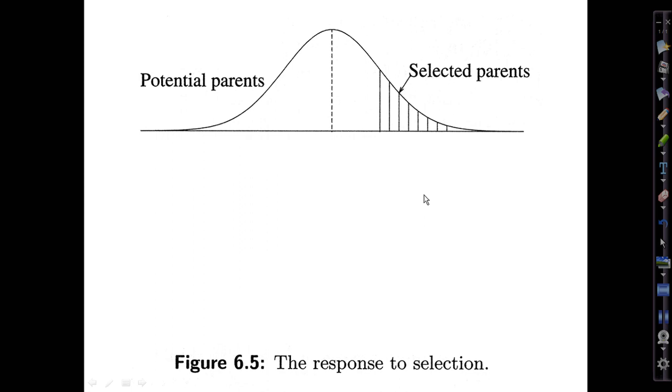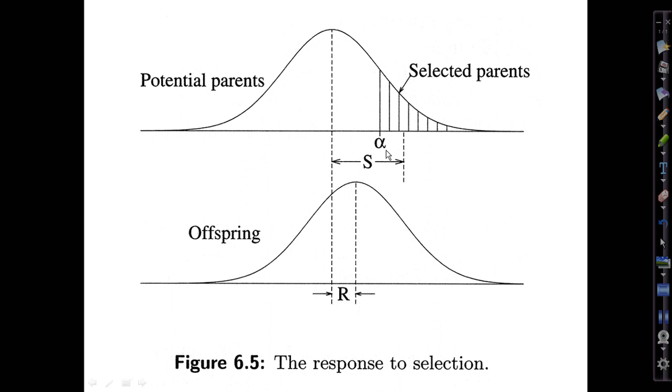In the agricultural context, which is what Fisher was working in largely when he came up with all this, people practiced truncation selection. You have some normal distribution of an economically important trait. Say you're trying to increase that value, which is related to yield perhaps. A thing to do was to pick some cutoff alpha, a minimum trait value above which you would include members of the parental generation as breeders and below which you wouldn't breed from them.